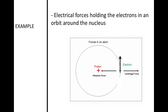Another example is electrical forces holding electrons in orbit around the nucleus. In an atom, protons are in the center with a positive charge, and electrons zip around the outside. The attractive centripetal force keeps the electron orbiting around the nucleus rather than flying off into nowhere.